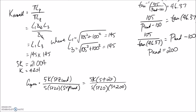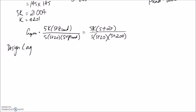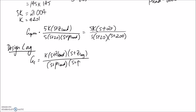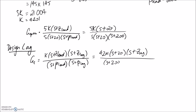The next step is to meet the steady state error requirement by designing the lag portion of our controller. GC will now be the full lead-lag form, adding a lag zero and a lag pole. At this point we know K is 4201, Z_lead is 20, and P_lead is 200. We still need to determine Z_lag and P_lag.